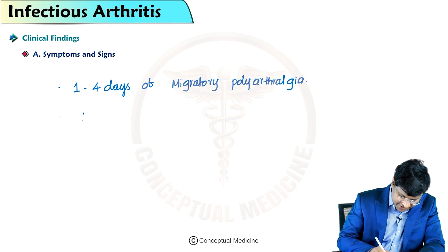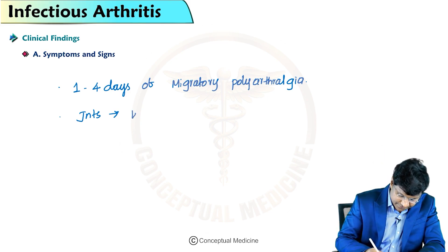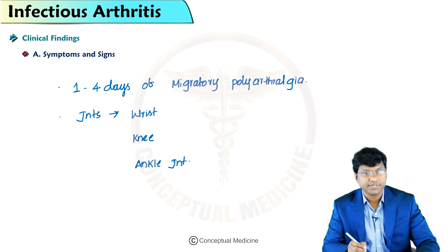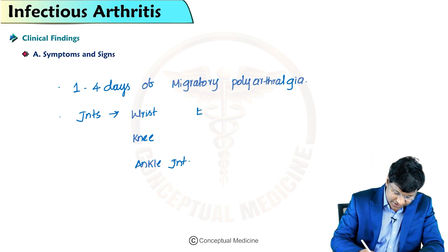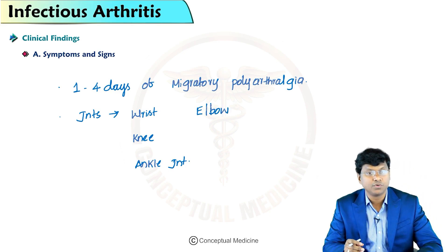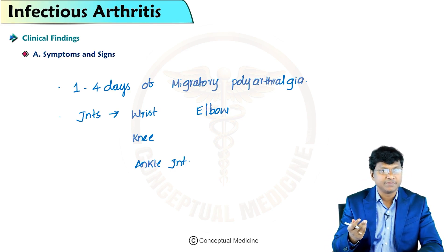The joints affected in gonococcal arthritis are the wrist, knee, ankle, and elbow joint. These are the joints which are affected in gonococcal arthritis.